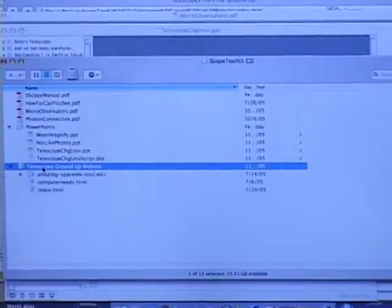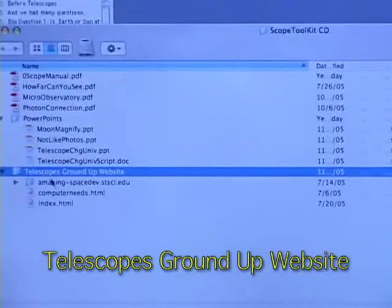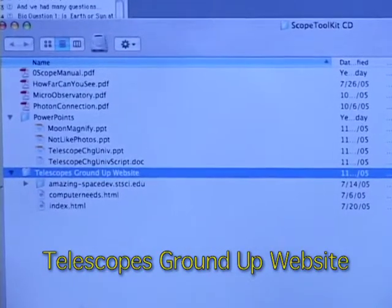On the CD you'll also find a folder named Telescopes from the Ground Up. The Telescopes from the Ground Up website produced by the folks at the Hubble Space Telescope Science Institute has been reproduced here on the CD so you don't need an internet connection to run it. Just click on index.html to start it up.